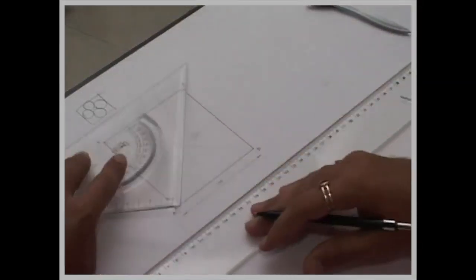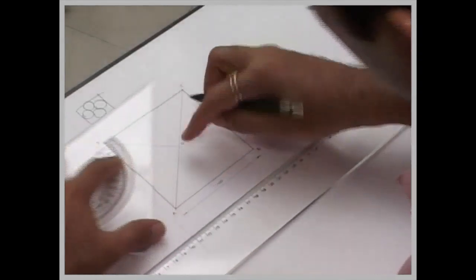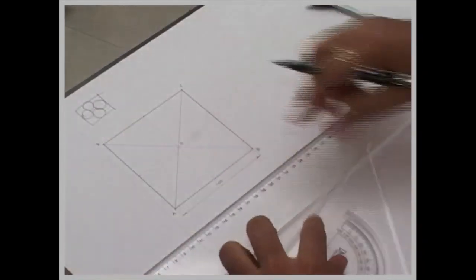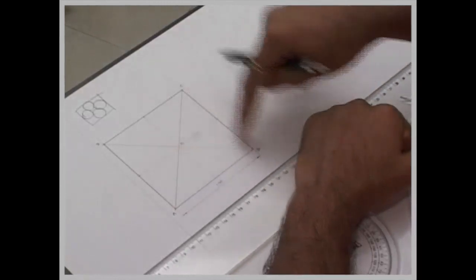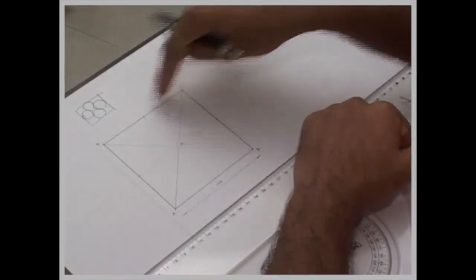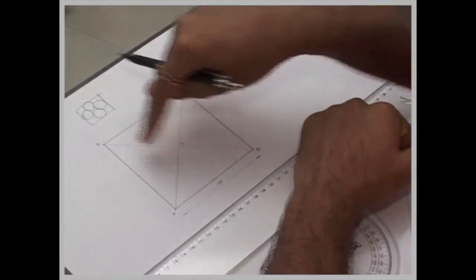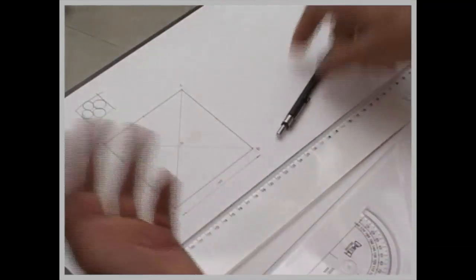So if you see in this case also, if you see properly, we have divided a square into four parts like O, A, B, one triangle; O, B, C, another triangle; O, C, D, another triangle; O, D, A, another triangle.